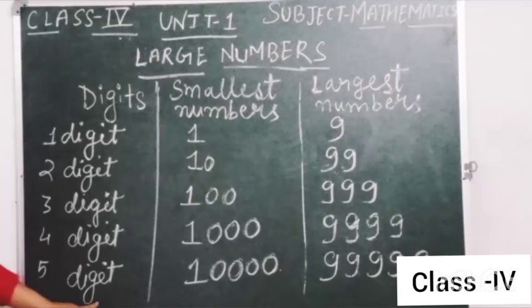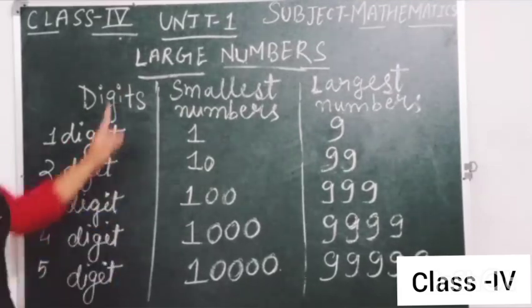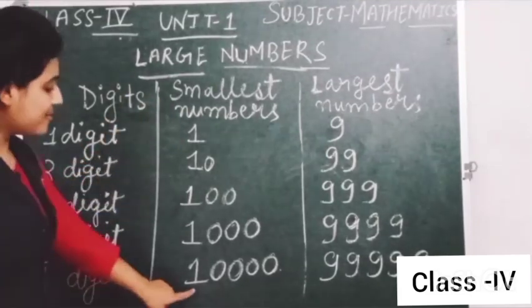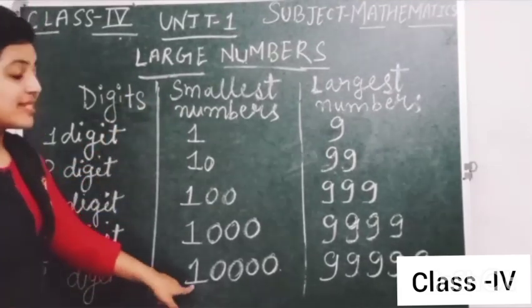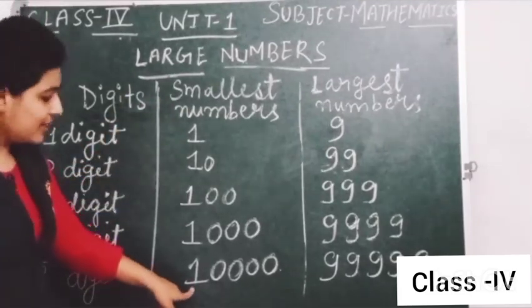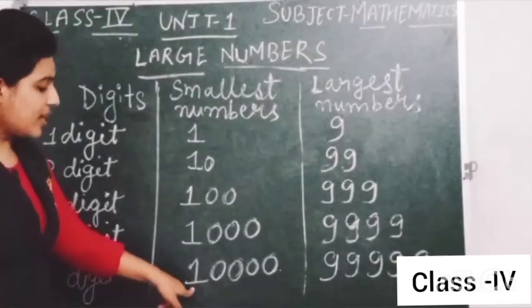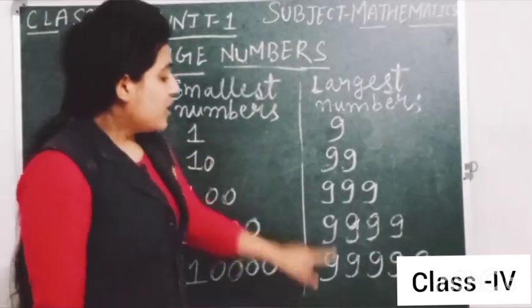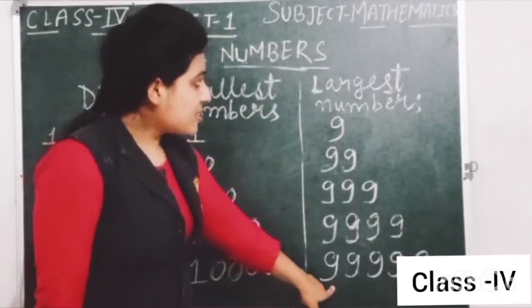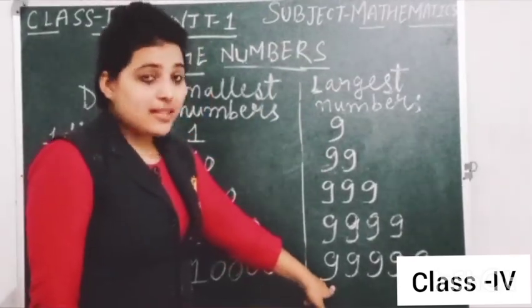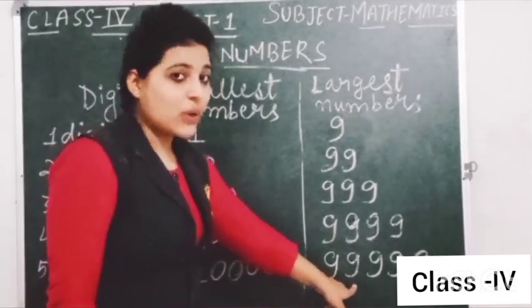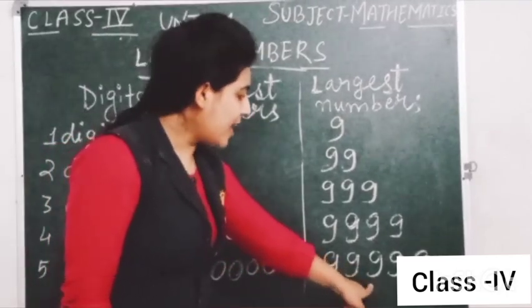The 5-digit smallest number is 10,000 and the 5-digit largest number is 99,999.